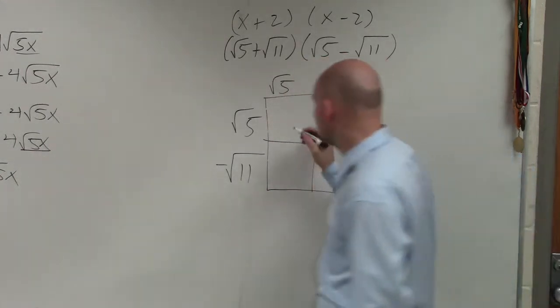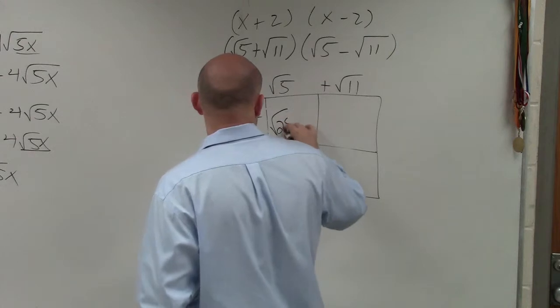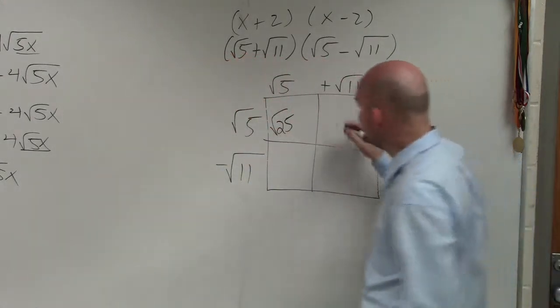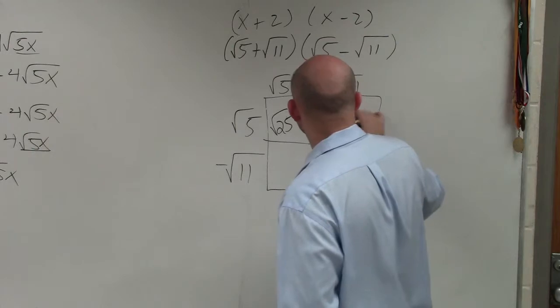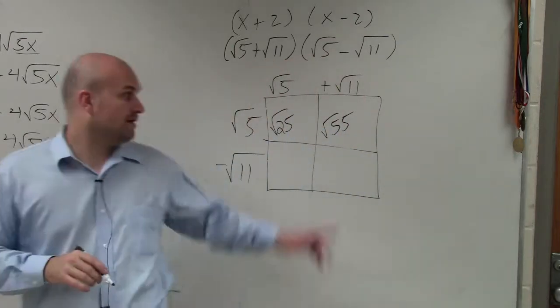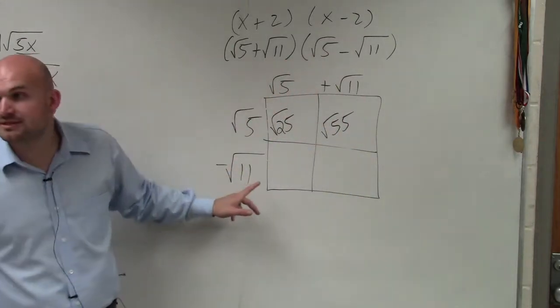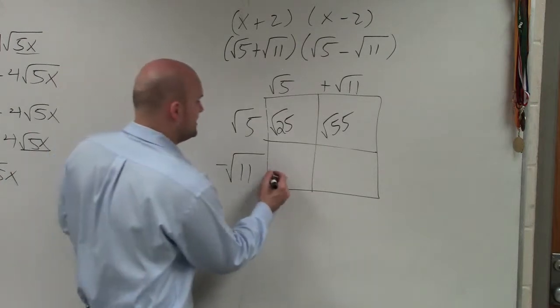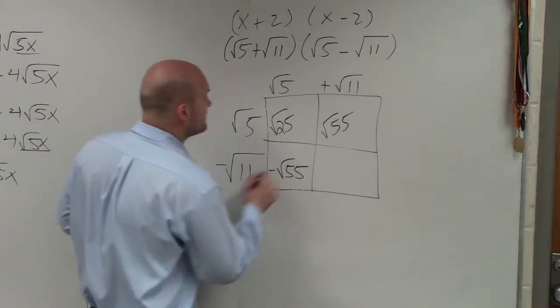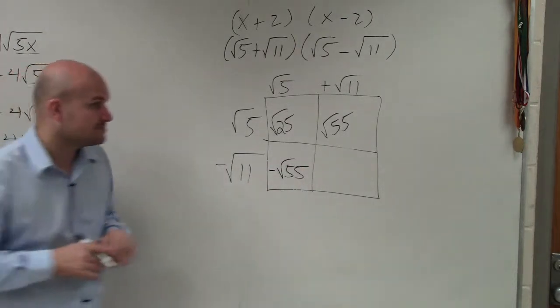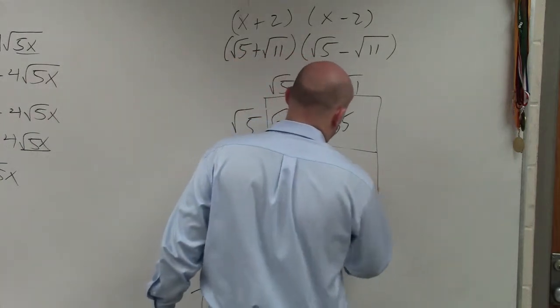So the square root of 5 times the square root of 5 is the square root of 25. The square root of 5 times the square root of 11 is going to be the square root of 55. The square root of 5 times negative square root of 11 is negative square root of 55. And negative square root of 11 times the square root of 11 is going to be the square root of 121.